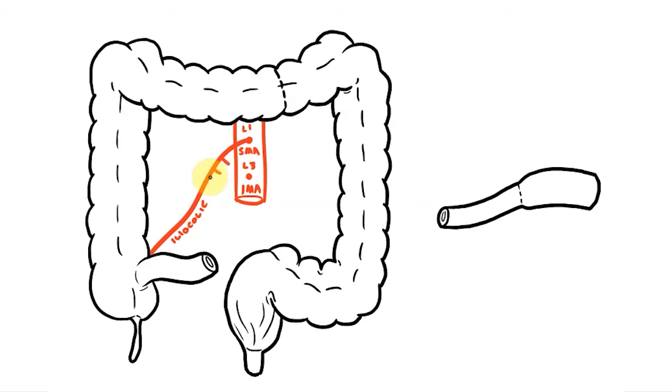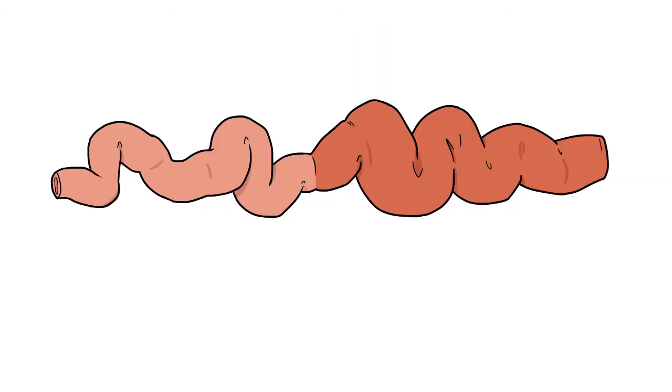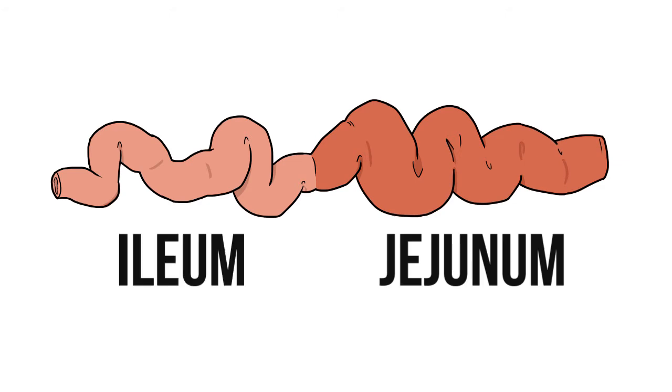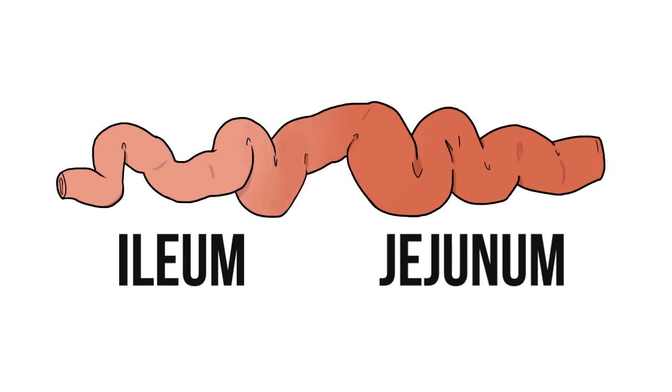Along its route it sends jejunal and ileal arteries that pass to the small intestine. Now although we talk about the jejunum and ileum as distinct regions there isn't really an obvious transition from one part to the other. However one way we can establish which portion of the small intestine we're looking at is by examining the blood vessels.